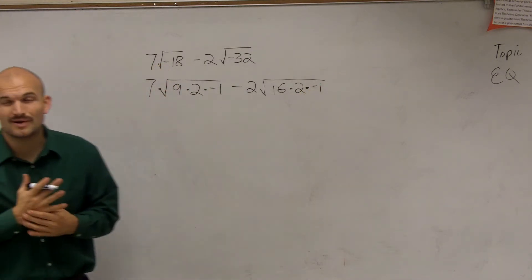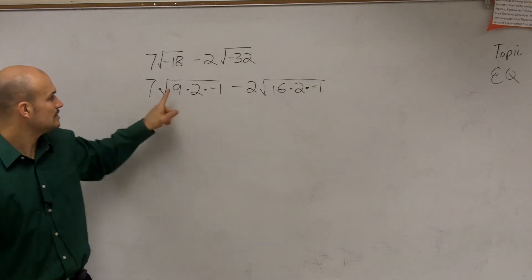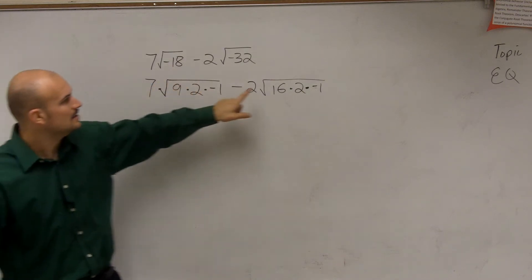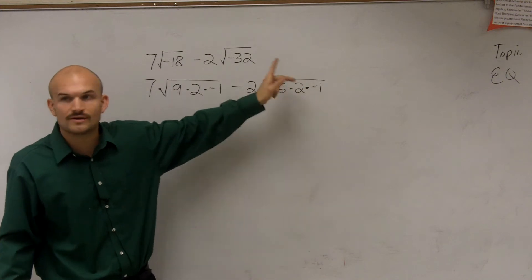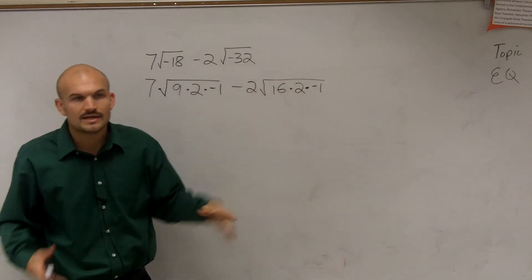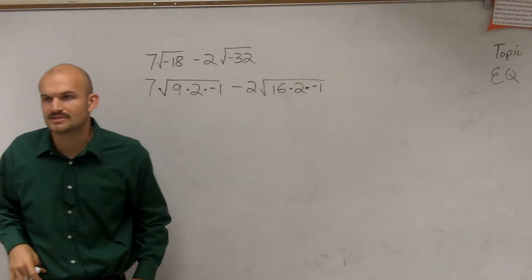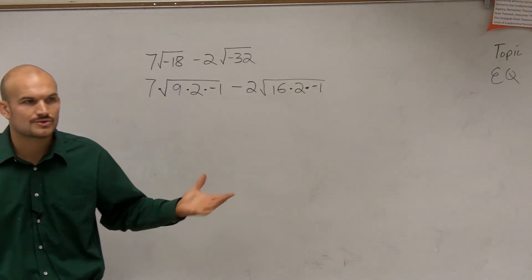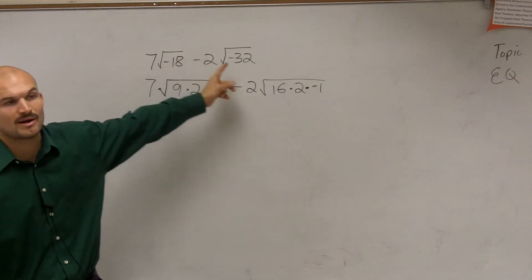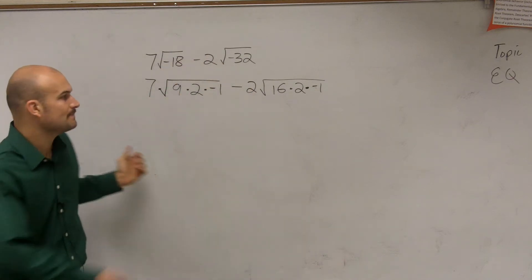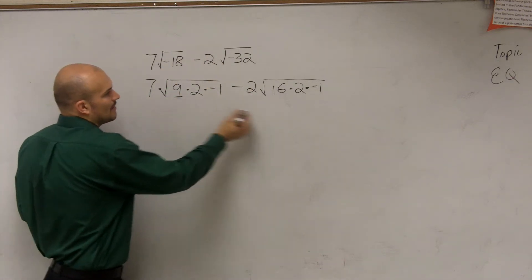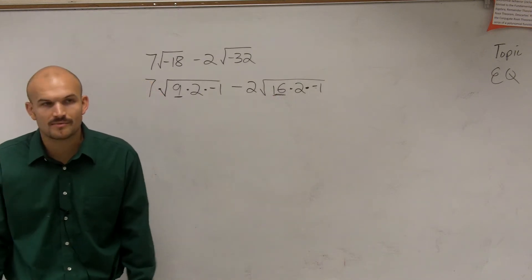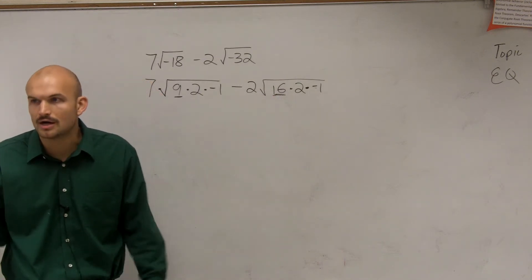So does everybody see what I did there? Does 9 times 2 times negative 1 give you negative 18? Yes. Does 16 times 2 times negative 1 give you negative 32? Yes. Now, notice the choice of my numbers. I didn't just randomly choose two numbers to multiply. I made sure I chose a number that was a square number. Why would you want to make sure you choose a square number? Because you can take the square root of square numbers, right?